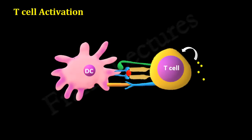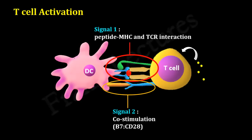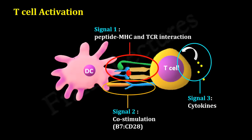For the complete activation of a naive T cell, three signals are required. The first signal is generated when the T cell receptor of the naive T cell recognizes and binds to the antigen presented by the dendritic cell, and the co-receptor recognizes the MHC molecule. The second signal, known as co-stimulation, results when co-stimulatory molecule B7 on the dendritic cell is recognized and bound by co-stimulatory receptor CD28 on the T cell. Finally, cytokines released by the T cell act via autocrine signaling, resulting in T cell activation, followed by proliferation and differentiation into effector T cells, generating an immune response.